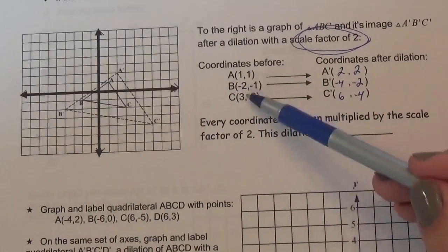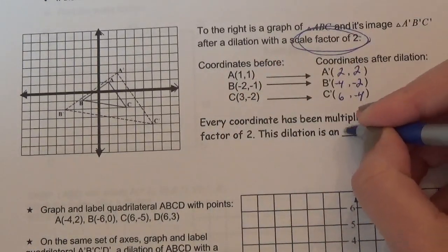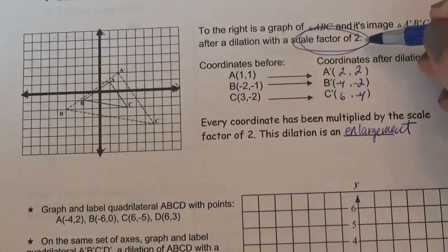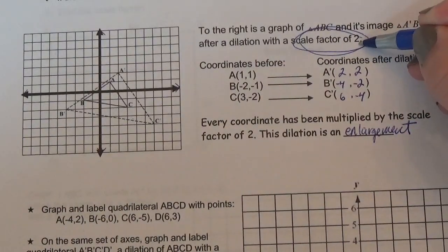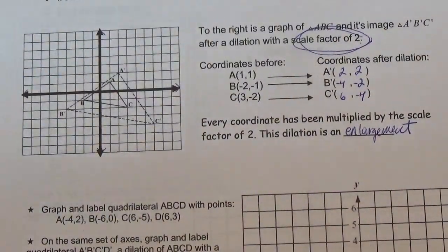So that's how you're going to do it. You're just going to do the math, multiply the coordinates, and this dilation is an enlargement. The scale factor was bigger than 1, and obviously the image got bigger.